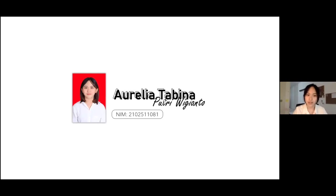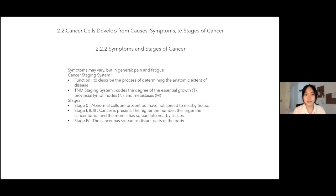My name is Awa Delia Tabinopteriyanto, with the last three digits of NIM 081. I will explain about the symptoms and stages of cancer. Symptoms may vary, but in general there are pain and fatigue. For cancer staging, there is the TNM staging system, where T refers to the size and extent of the main tumor, N refers to the number of nearby lymph nodes that have cancer, and M refers to whether the cancer has metastasized.